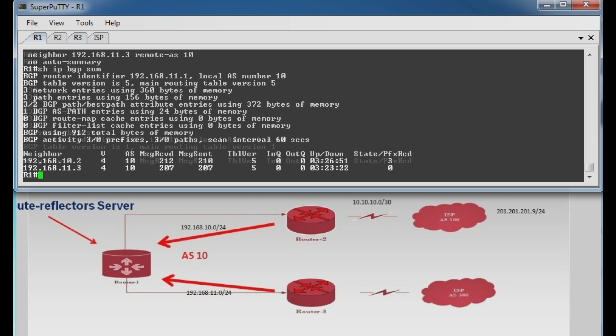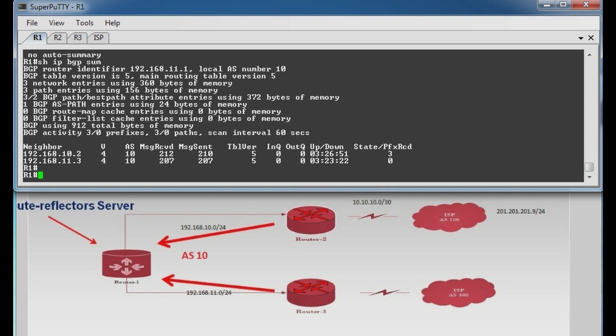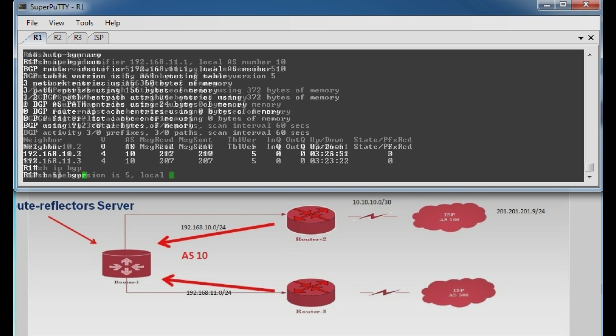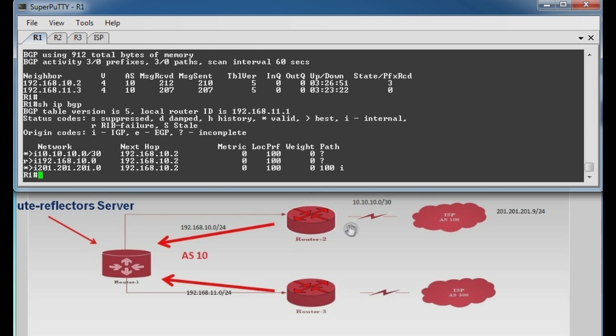Now route reflector in BGP resolves this full mesh requirement in IBGP. Let's start configuring router 1 as route reflector server and router 2 and 3 as clients.